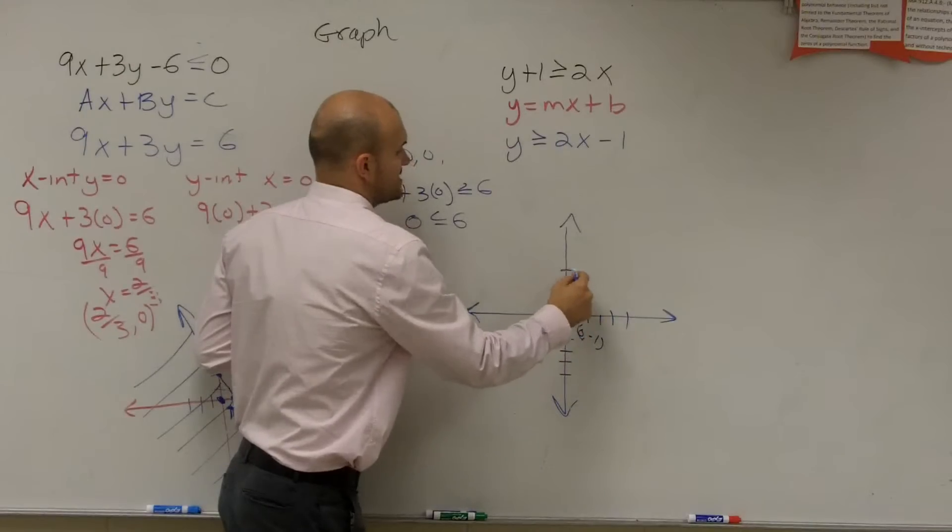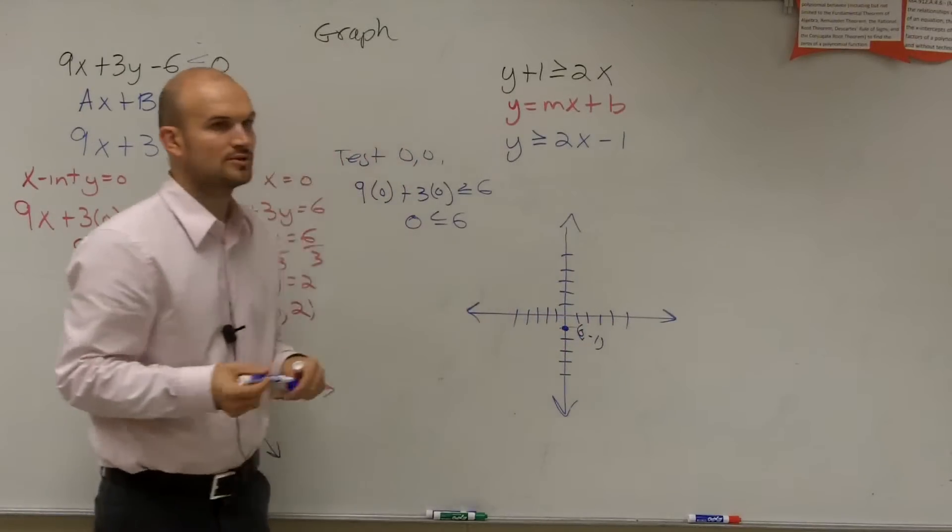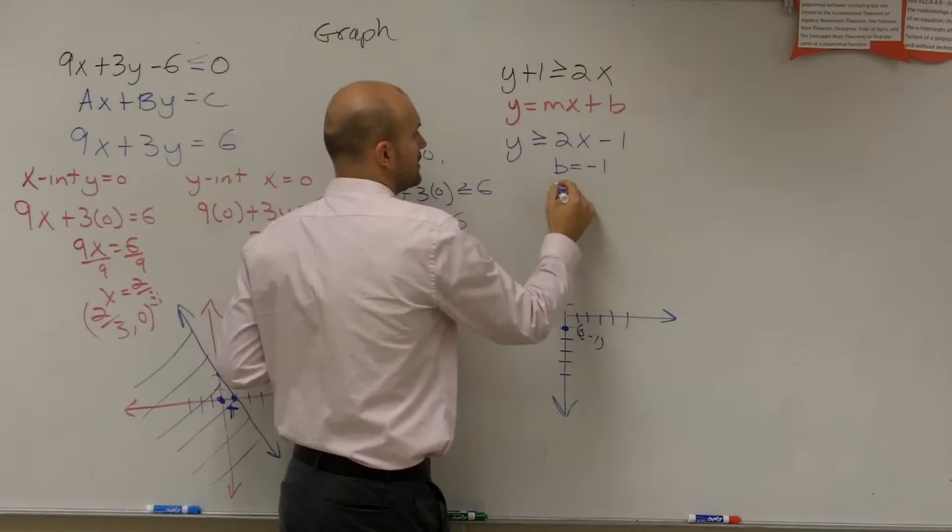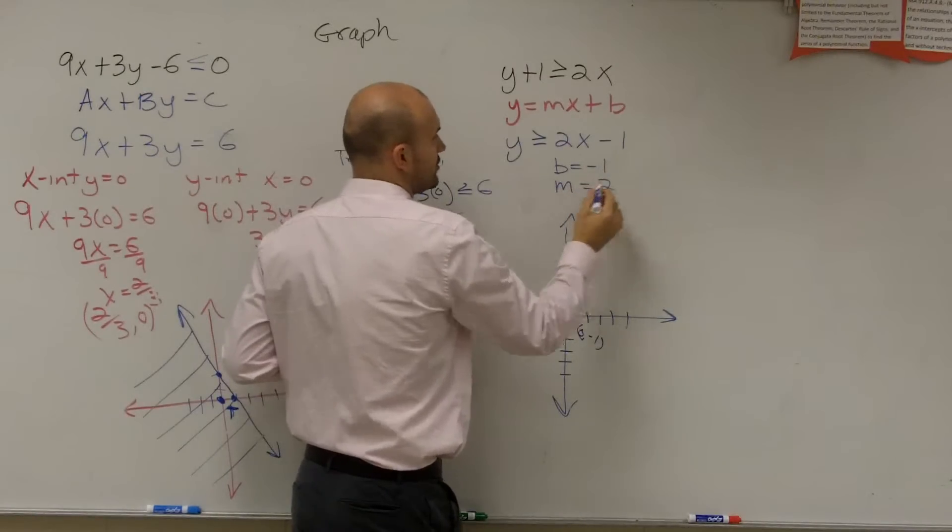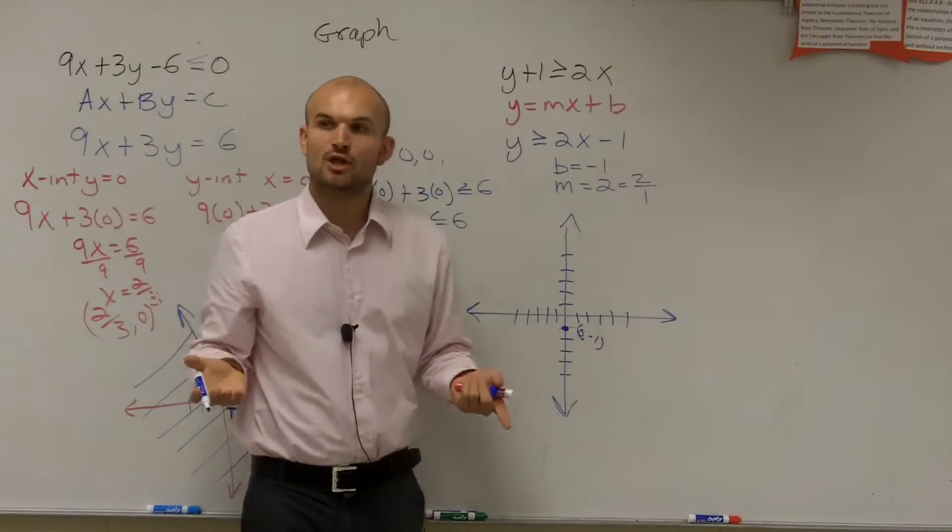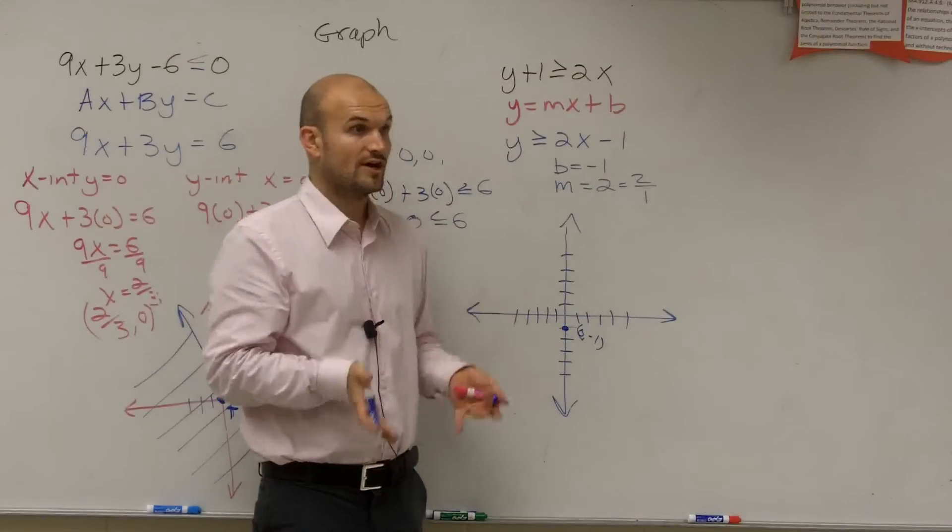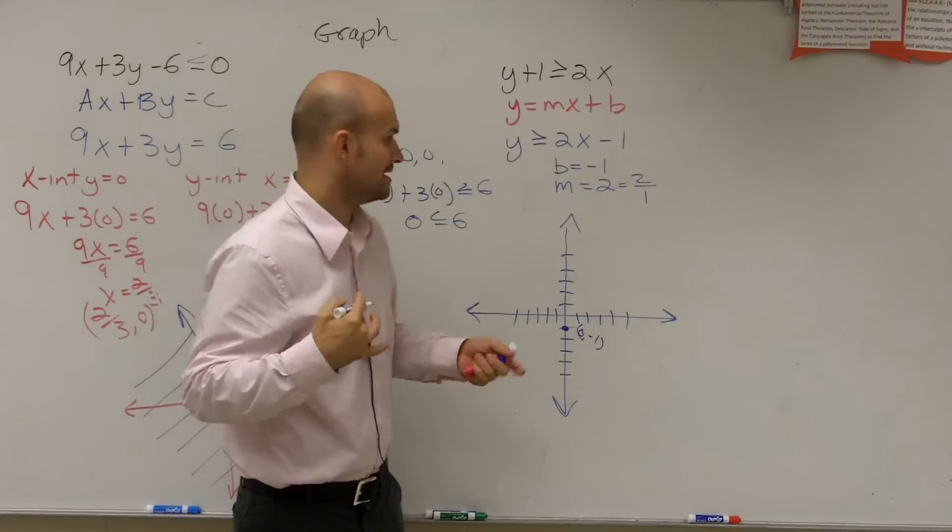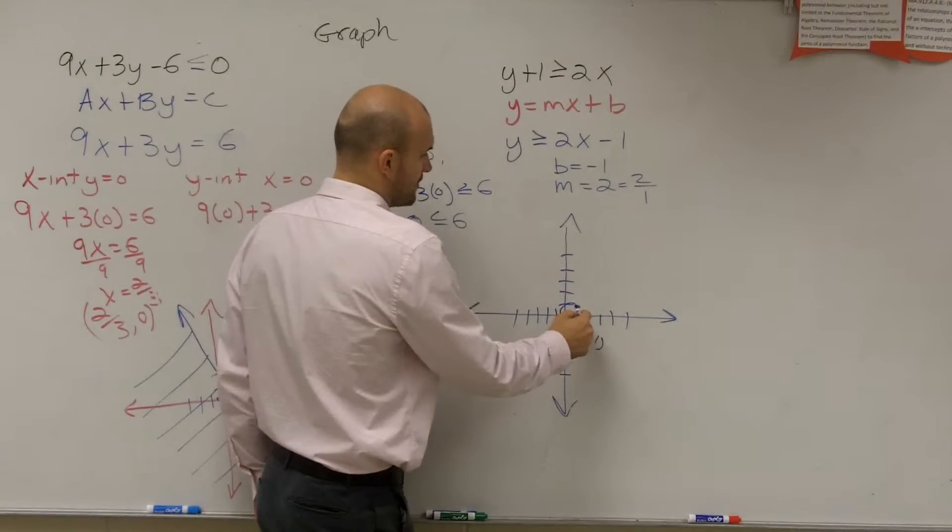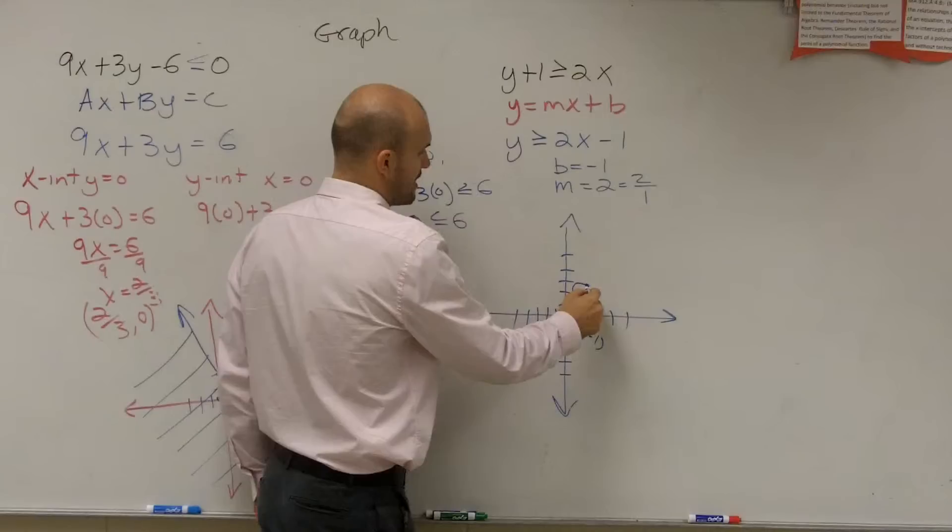Then, the next thing we're going to do is follow our slope to the next point. So if b equals negative 1, our m equals 2. Or we can write that as 2 over 1. Because remember, slope is rise over run. How far are you going to go up or down compared to left or right? So when it's positive, that tells us to go up two units to the right one.